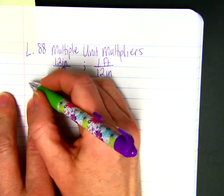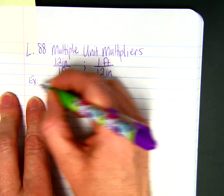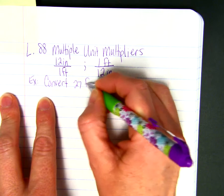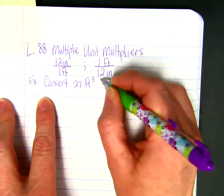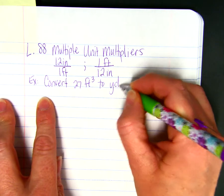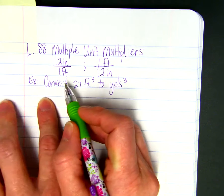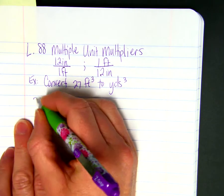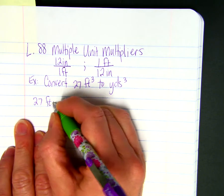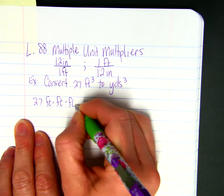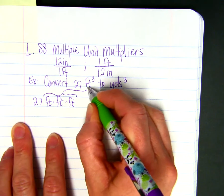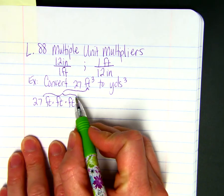When we have an example like convert 27 feet cubed to yards cubed, we have to remember that feet cubed means feet times feet times feet. Those three multiplied together would represent feet cubed.